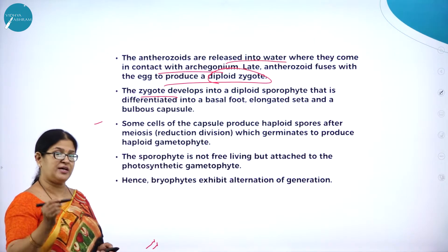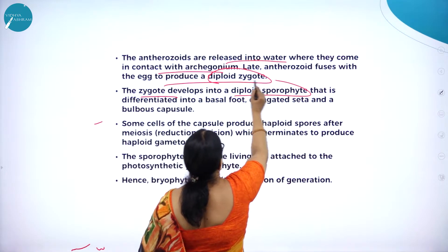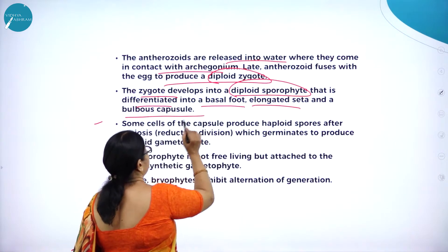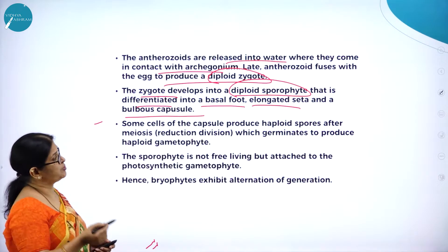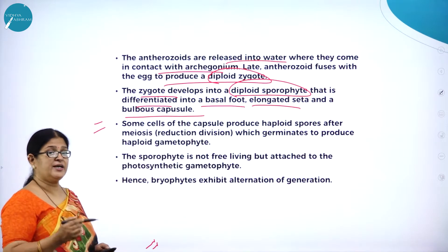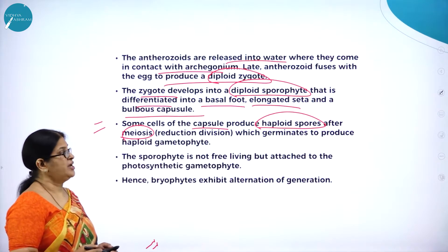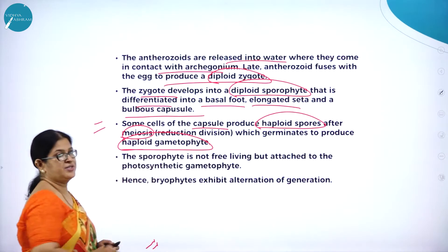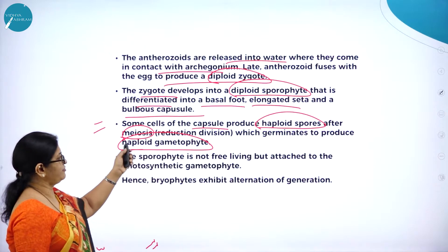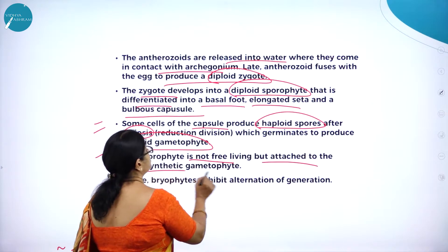The diploid zygote develops into a diploid sporophyte that is differentiated into a basal foot, elongated seta and bulbous capsule. Some cells of the capsule produce haploid spores after meiosis - meiosis being a reduction division - which then germinate to produce the haploid gametophyte. So the predominant stage here is the haploid gametophyte.